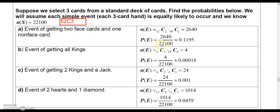And then divide that by the total combinations, 22,100, and get a probability of 0.1195.